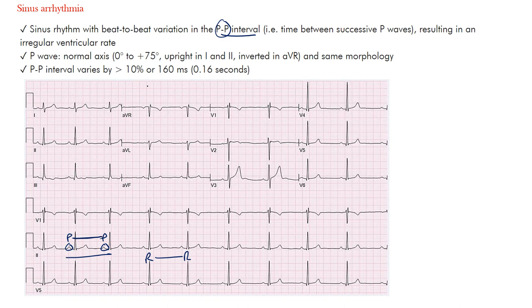There is still some regularity to it overall. This is not an irregularly irregular rhythm like atrial fibrillation — rather, it is regularly irregular. It's irregular, but there's some regularity to it. Often it's a result of respiratory variation, which we look at in further detail in the course.